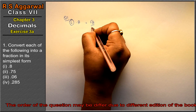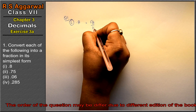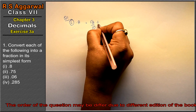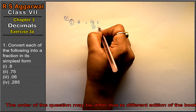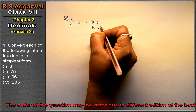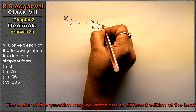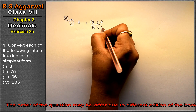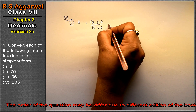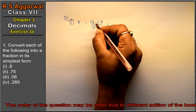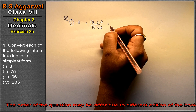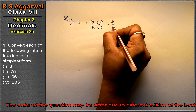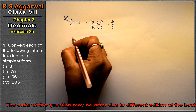So 0.8 becomes 8 over 10. Now we divide both numbers by the same number — like 2. So 8 divided by 2 is 4, and 10 divided by 2 is 5. That means 4 upon 5 is the answer.